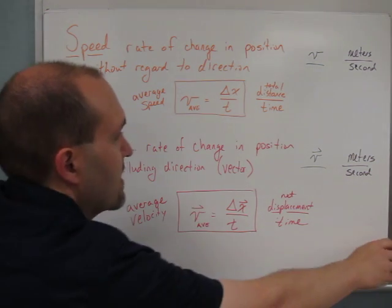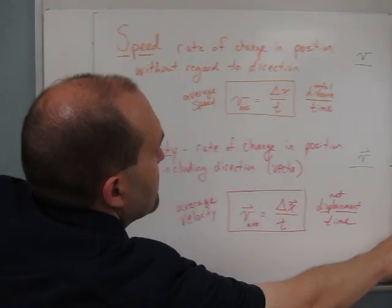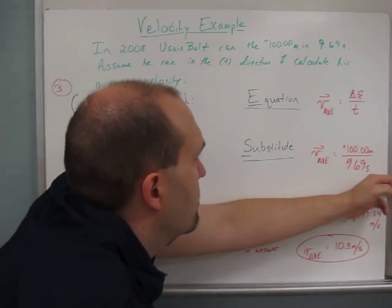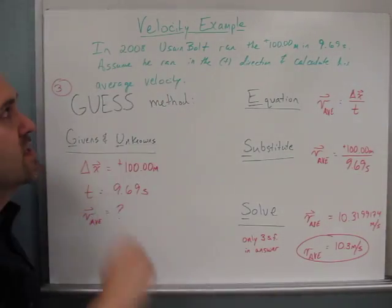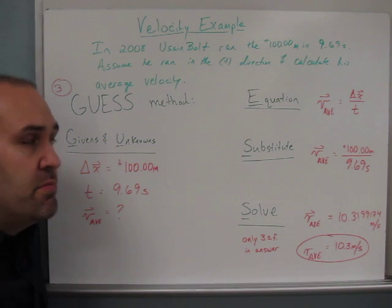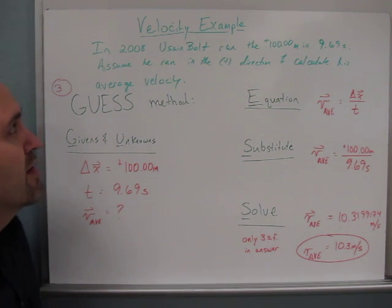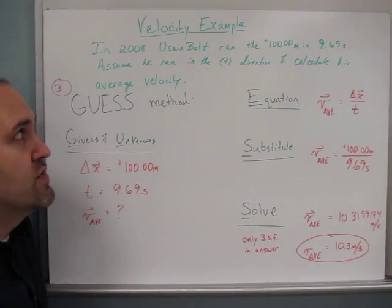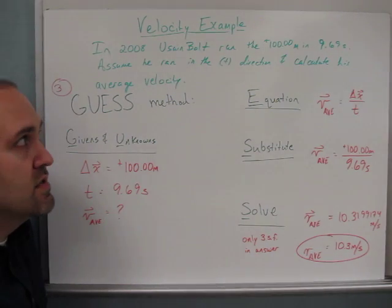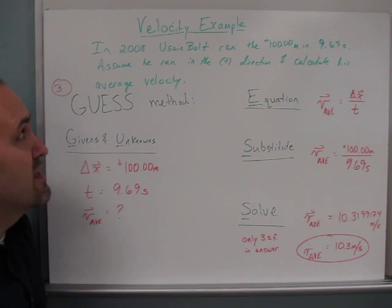Let's look at an example of that, just a simple one, a velocity example. Maybe you recall—I don't think you're too young to remember this—but in the 2008 Olympics, Jamaican Usain Bolt ran the 100 meters in 9.69 seconds. If we assume that he ran in the positive direction, whatever direction that was that he ran, we'll call it positive.